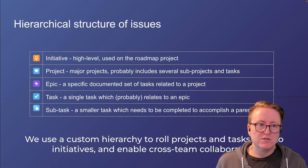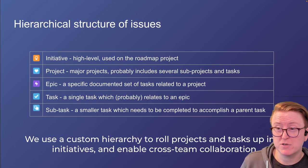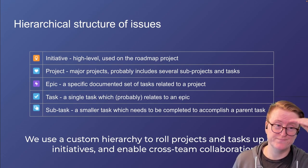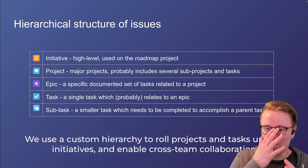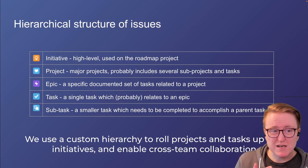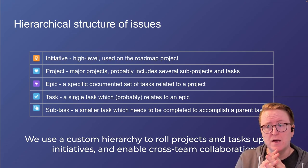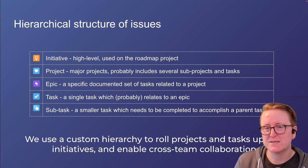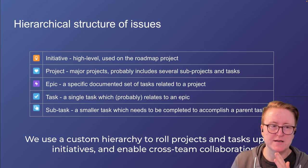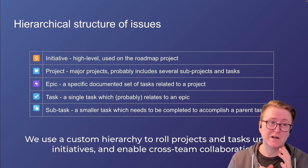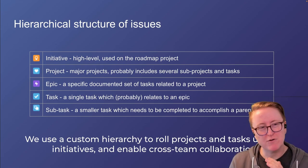We have a structure in Jira you might not be familiar with. We've got initiatives, which are high-level items used on the roadmap project — think of these as top-level organizational projects. Within an initiative, we have projects, which are the major buckets of work. A project will usually have epics, which are a documented group of related tasks. Tasks are the single things you have to actually do, and within those you can break tasks into smaller subtasks, either to clarify what needs doing or to credit different people for different parts.